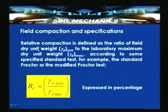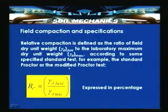Relative compaction (RC) is defined as the ratio of the field dry unit weight to the laboratory maximum dry unit weight, expressed as a percentage: RC = (γd_field / γd_max) × 100. The γd_max can be obtained from either the standard Proctor test or the modified Proctor test as specified. One should not confuse relative density with relative compaction; relative density (density index) is used for granular soils.